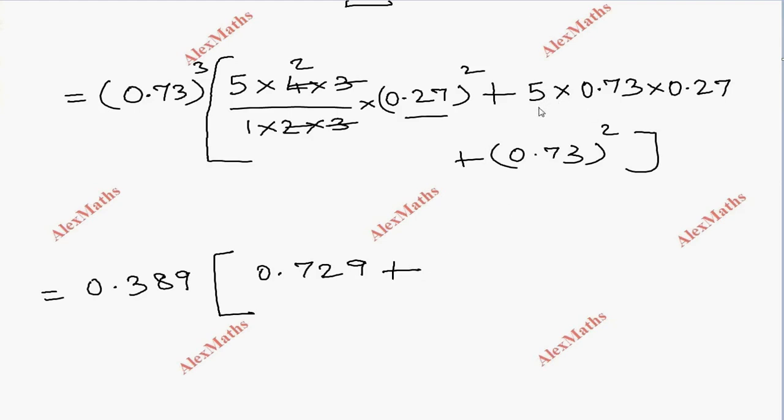The second value: 5 times 0.73 times 0.27 equals 0.9855. The last value: 0.73 squared equals 0.5329.